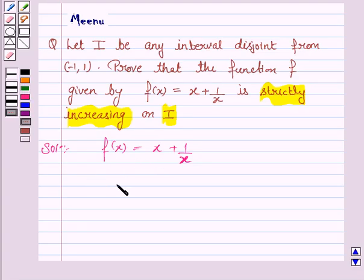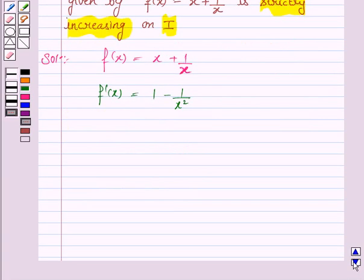We first need to find the first order derivative of this function. f'(x) is equal to 1 minus 1 upon x squared. Derivative of x is 1 and derivative of 1 upon x is minus 1 upon x squared.